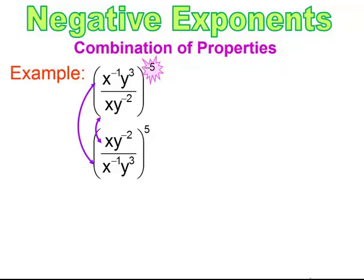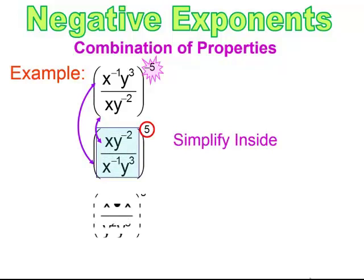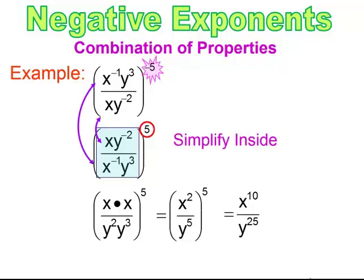Now that the outside power is positive, I simplify inside. I move the things that need to move: that x on top and x to the negative 1 on the bottom — the x to the negative 1 comes up top. That y to the negative 2nd goes to the bottom, and y to the 3rd stays on the bottom because it's positive. Now I simplify: x times x is the product property — add the exponents — I get x squared. y squared times y to the 3rd gives me y to the 5th. Now I do the quotient raised to a power, taking that power and giving it to everything inside, so I get x to the 10th over y to the 25th.